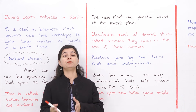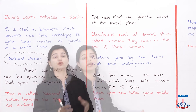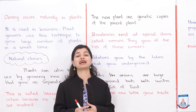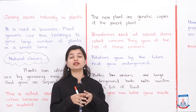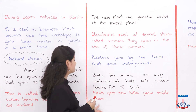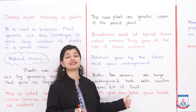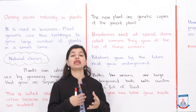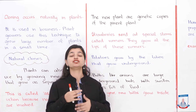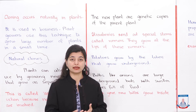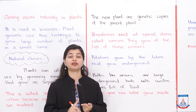The next example is bulbs, like onions. Bulbs are large underground buds with swollen leaves full of food — the edible part of the onion is food and it has different layers referred to as leaves. New buds grow inside them each year, so every year new buds grow and that is how onions reproduce. We have now covered three examples: strawberries, potatoes, and onions.